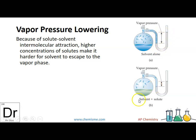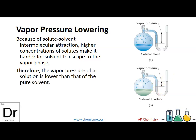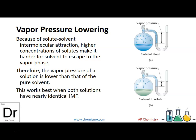But when you add a solute to it — notice it's green now — there are fewer solvent particles. There used to be quite a bit, and now there are a lot fewer. So the vapor pressure, or the gas particles pushing on each other, is much decreased because they're kind of stuck in the solution. The vapor pressure of the solution is lower than that of the pure solvent.